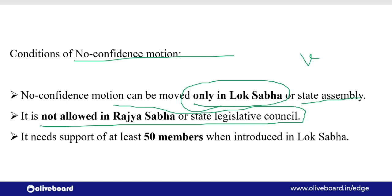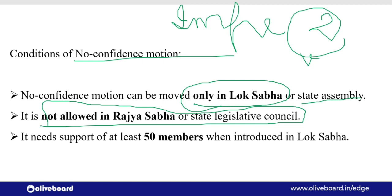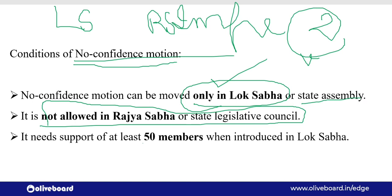अब देखिए, अगर question होता कि impeachment कौन से house में शुरू हो सकता है, तो उसका answer होता कि यह दोनों ही houses में शुरू हो सकता है। President का जो impeachment होता है, या Supreme Court के judges का, High Court के judges का — उसके लिए जो proceedings हैं वो Lok Sabha में भी शुरू हो सकती है और Rajya Sabha में भी। लेकिन no confidence motion अगर सरकार के खिलाफ निकालना है, तो उसका प्रस्ताव शुरू होगा सिर्फ Lok Sabha से, और कम से कम 50 MPs का sign होना जरूरी है।